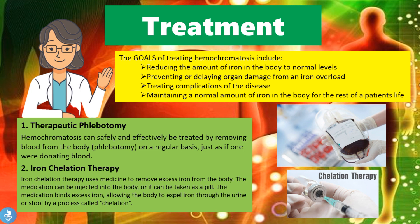There are four main goals of treating hemochromatosis: reducing the amount of iron in the body to normal levels, preventing or delaying organ damage from iron overload, treating the complications of the disease, and maintaining a normal amount of iron in the body for the rest of the patient's life.